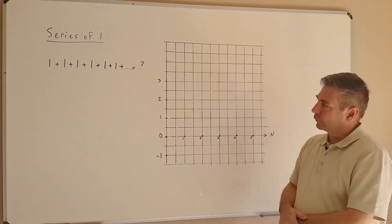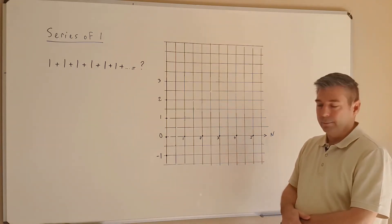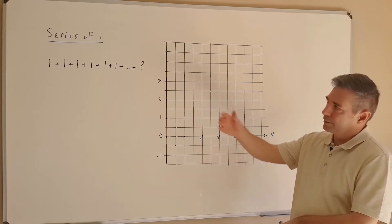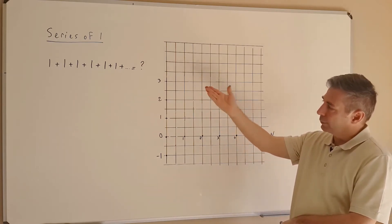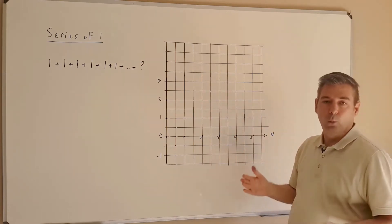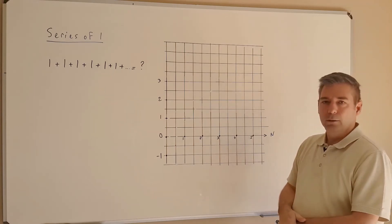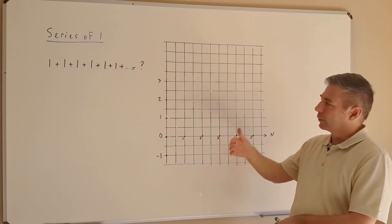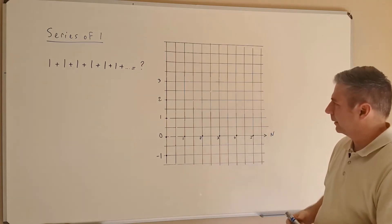Okay, third example for today: the series of 1. So the divergent series of 1 — simple — 1 plus 1 plus 1 plus 1 plus 1, forever. What is it equal to? Not only what is the sum, but how graphically can we determine that sum?